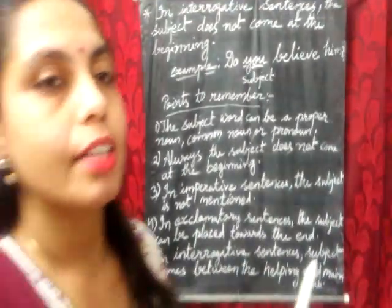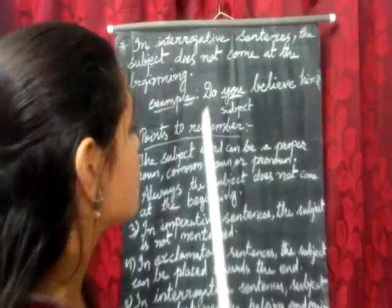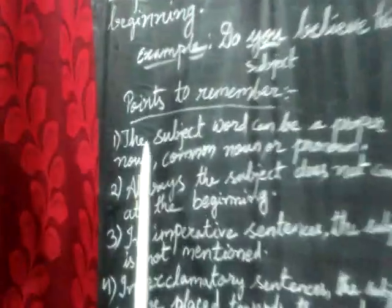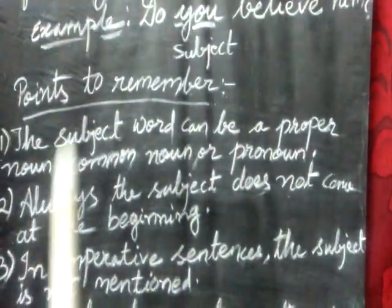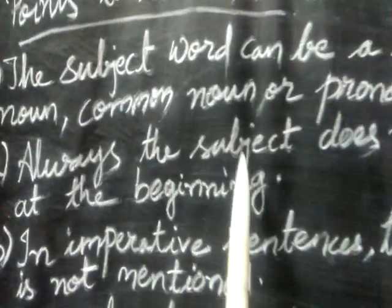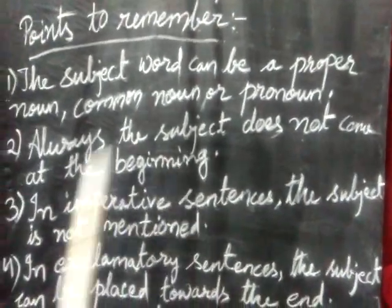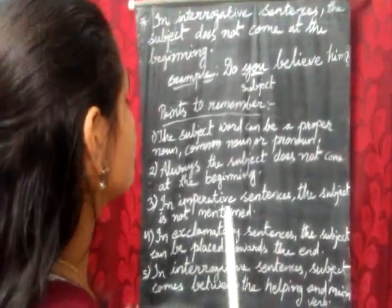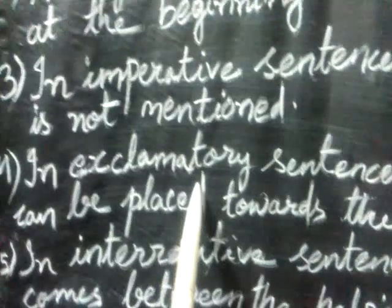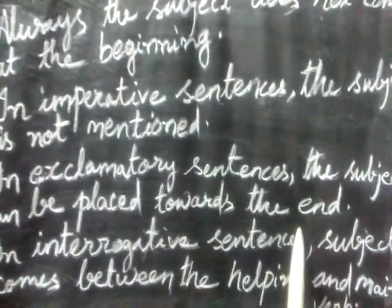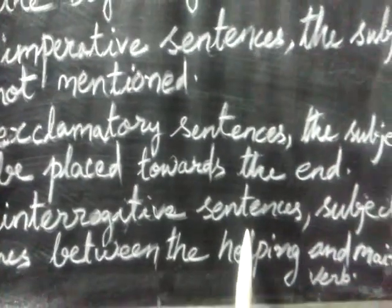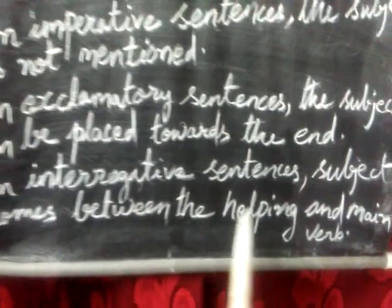Children, for doing any exercise on subject and predicate, you must remember all these points. First: the subject word can be a proper noun, common noun, or pronoun. Second: the subject does not always come at the beginning. Third: in imperative sentences, the subject is not mentioned. Fourth: in exclamatory sentences, the subject can be placed towards the end. Fifth: in interrogative sentences, the subject comes between the helping verb and the main verb. I hope you have understood this lesson and can do exercises on subject and predicate easily. Thank you.